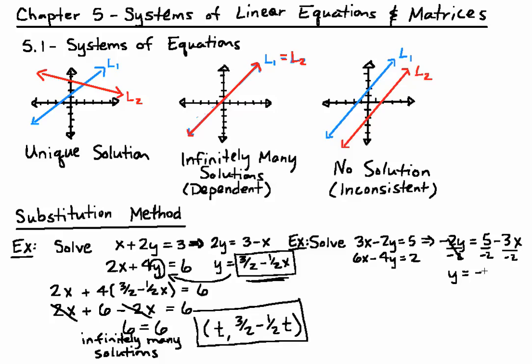And this gives me negative 5 halves plus 3 halves x because the negative 3 divided by negative 2, the negatives cancel, leaving us with a positive. Then again, I will substitute negative 5 halves plus 3 halves x into y.